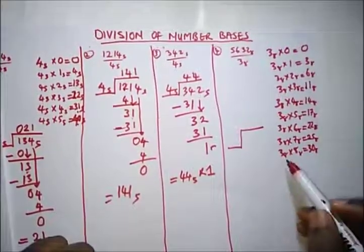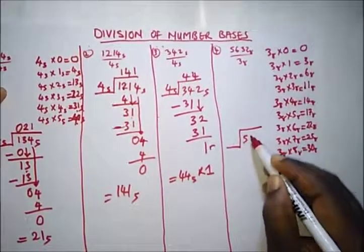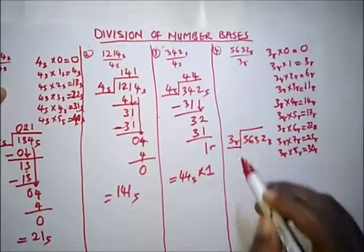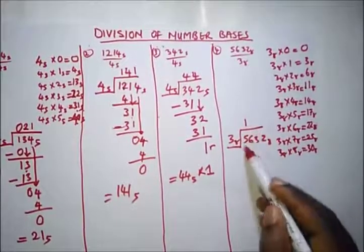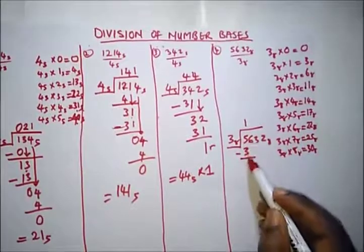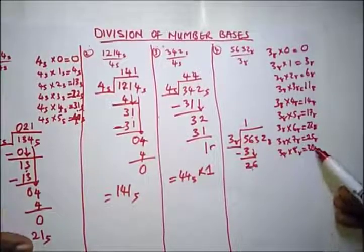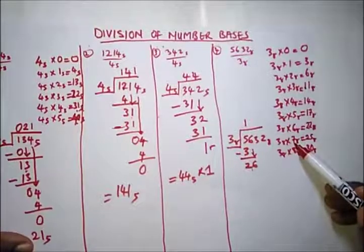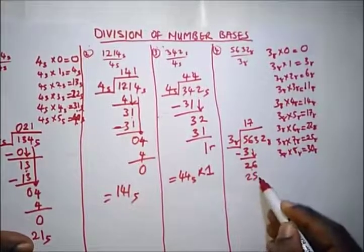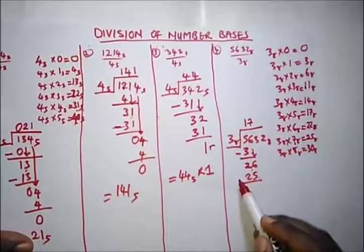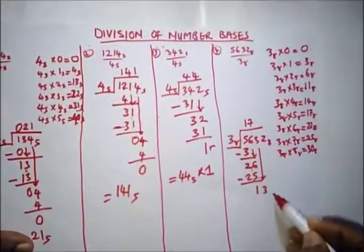We have 5632 base 8 divided by 3 base 8. 3 into 5 goes 1 time. 1 times 3 is 3. Subtract: 5 minus 3 is 2. Bring down 6, giving 26 base 8. 3 into 26 base 8 goes 7 times — from our table, 3 times 7 is 25 base 8. Write 7. Subtract: 6 minus 5 is 1, and the leading digits cancel. Bring down 3, giving 13 base 8.